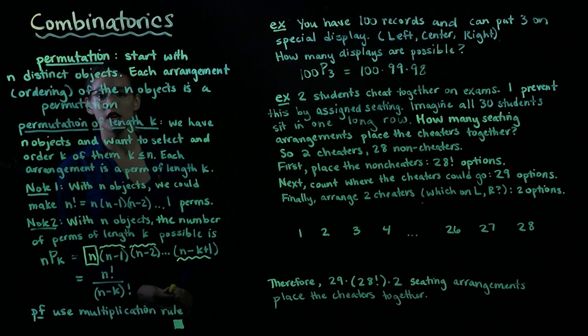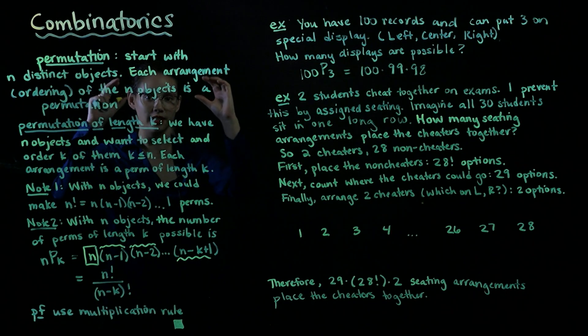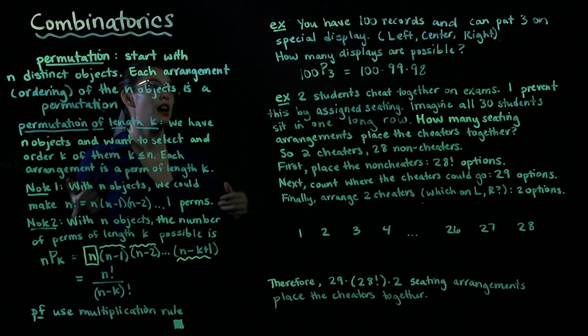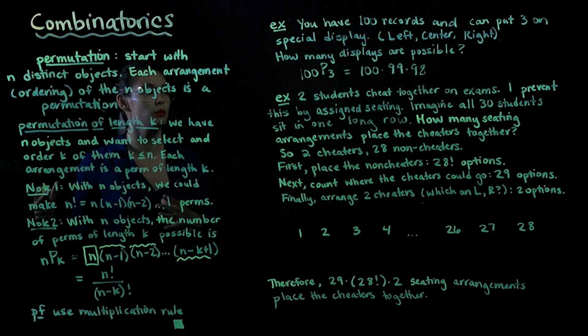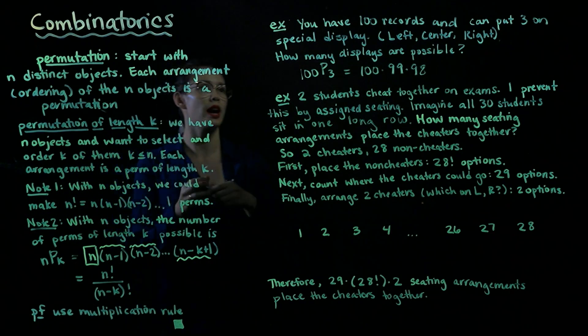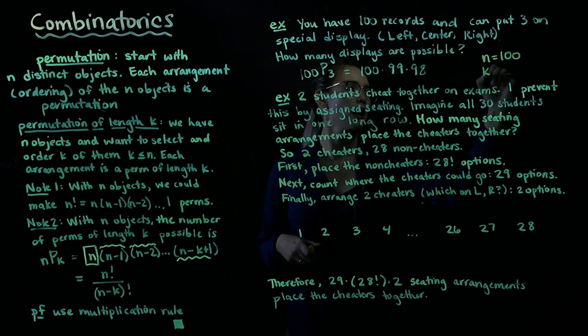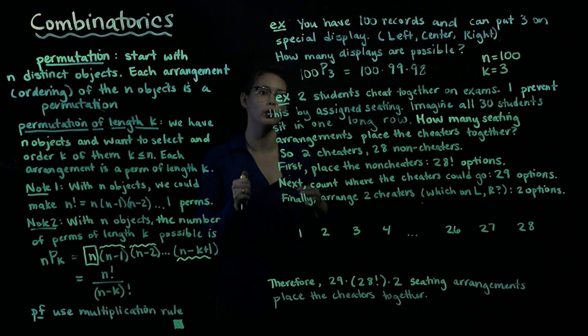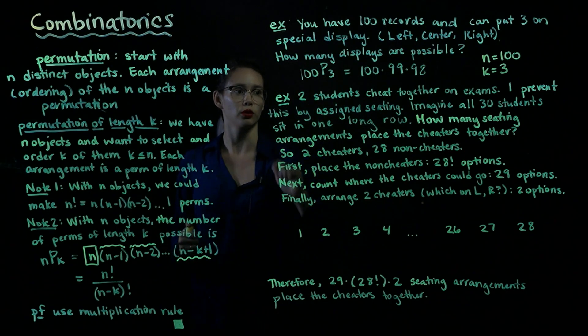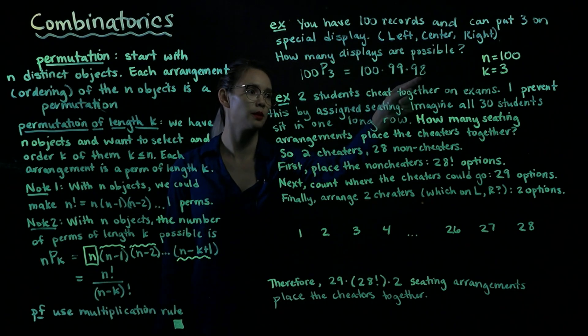In this first example, imagine that you have 100 records and you can put three of them on a special display in your dorm room. So you have a left spot, a center spot, and then a right spot. How many different displays are possible? Well, this is an ordering sort of problem, so we're going to use permutations. We have n equals 100 different records, and then we have k equals 3 that we're going to be selecting and then ordering. So this is 100 permute 3, which we know is equal to 100 times 99 times 98.